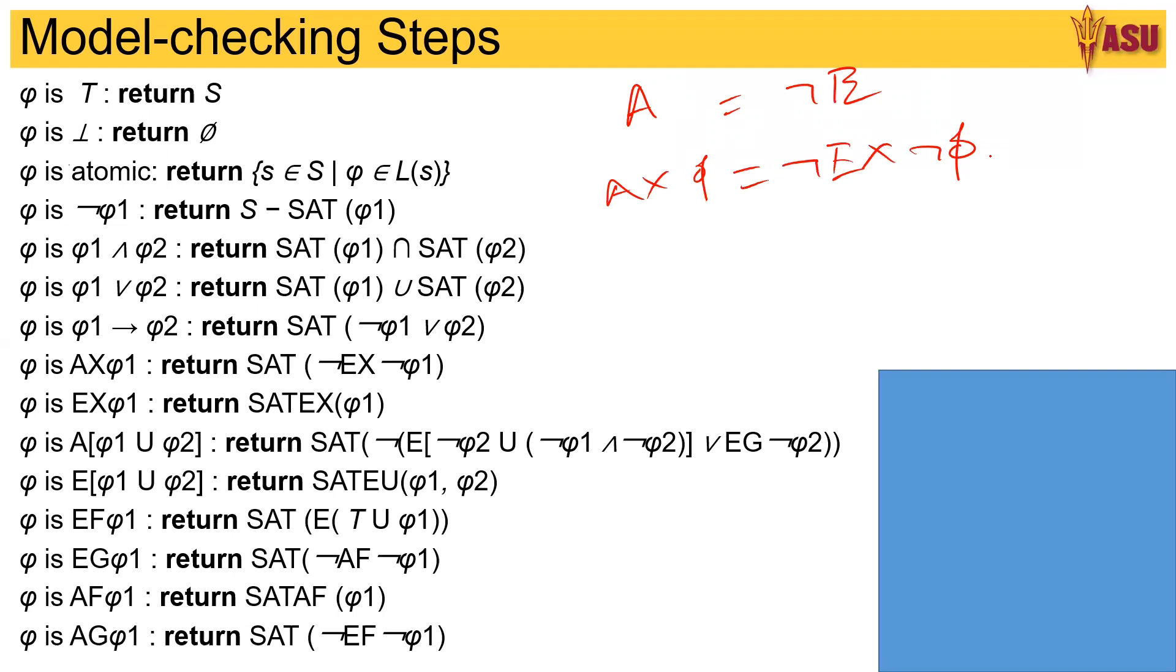Similarly, we prove E by saying that there exists at least one path. So you traverse the path and if you find one path at least which has φ, we say that's true.